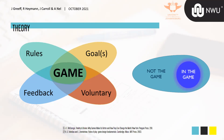Another useful definition comes from Salen and Zimmermann, who argue that games are inherently very difficult to define. They created the concept of a 'magic circle,' saying that you will recognize when you are in a game — it is an inherently human ability. You can draw a magic circle around the act of playing and identify which parts are internal to the game and which are external. These are just two definitions from literature that informed our design thinking.